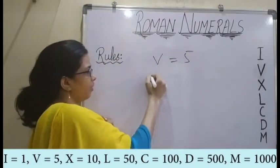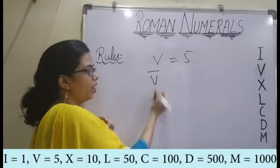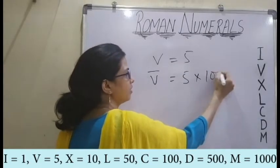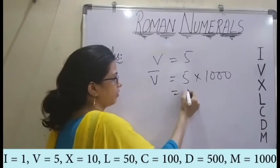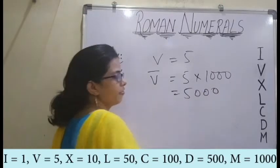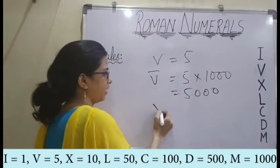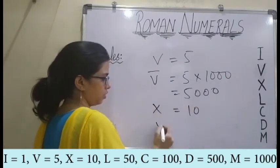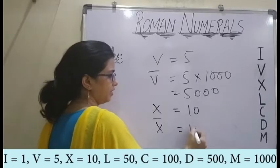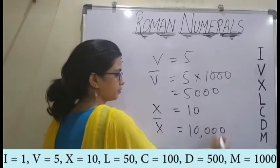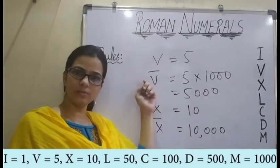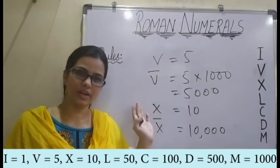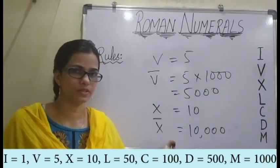V stands for 5. And if I put a bar over V, this value gets multiplied by 1000, and we get 5000. Similarly, if I write X, the value of X is 10. So if I write X with a bar, I get 10,000. If a bar is put over any symbol, that value is multiplied by 1000, so its value increases 1000 times.